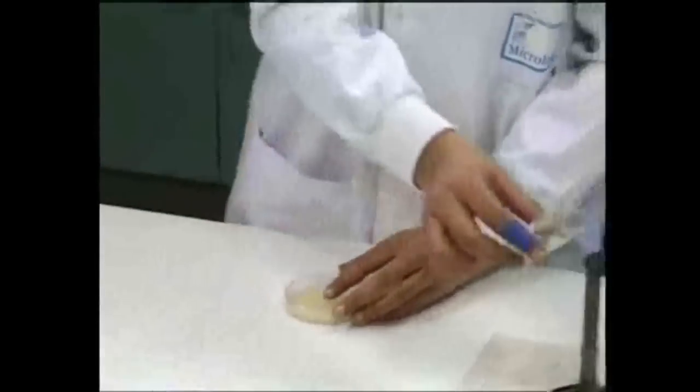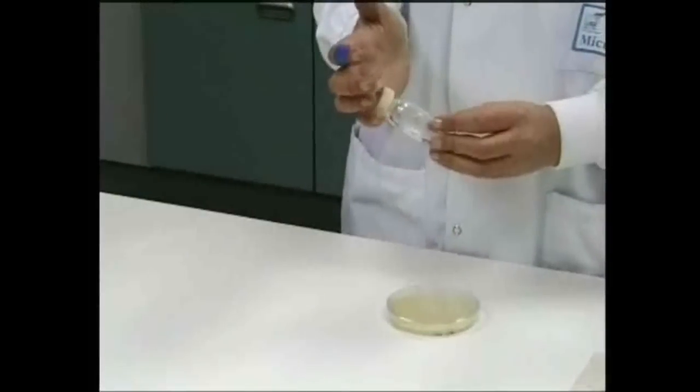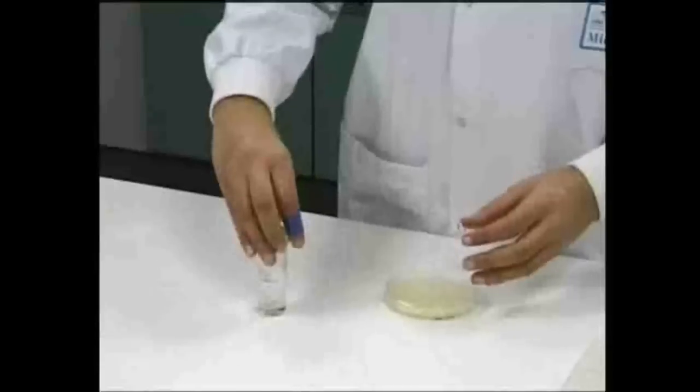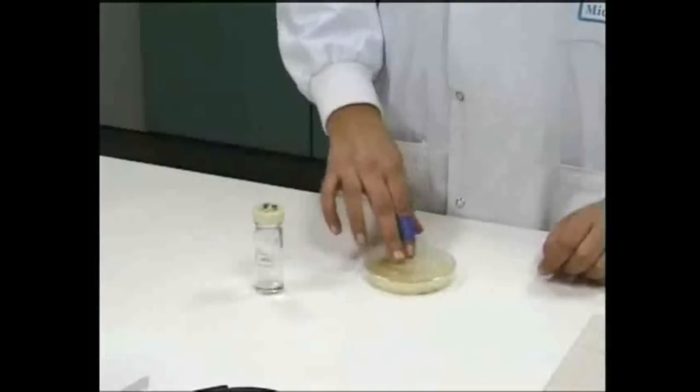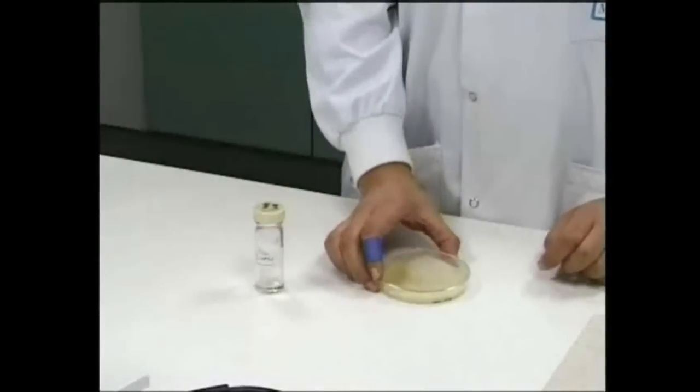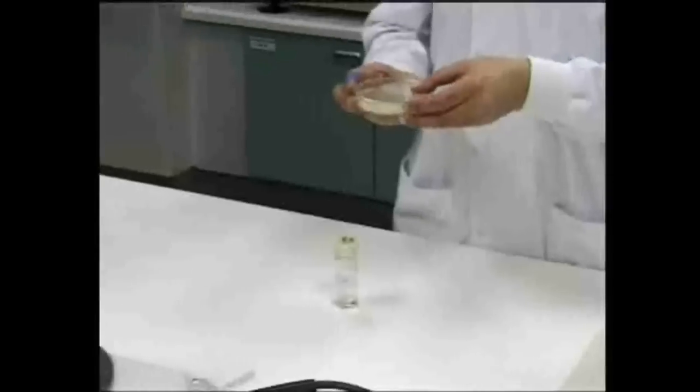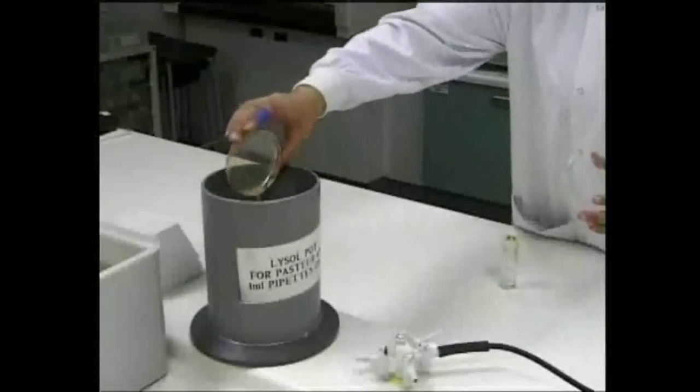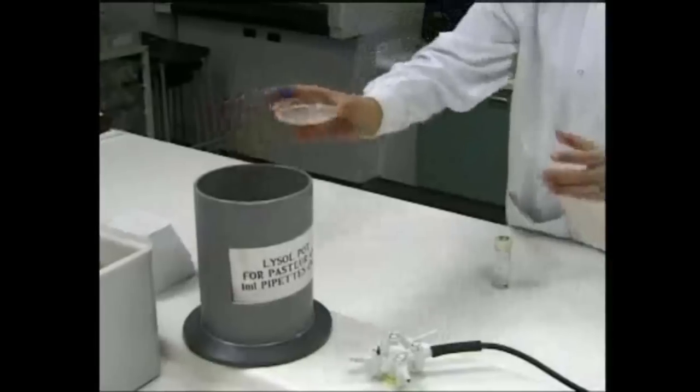The plate is then swirled, allowing the culture to cover the agar completely and to distribute the bacteria evenly. Any excess culture is discarded by tipping it into a solution of disinfectant. The plate should then be left to dry before incubation.